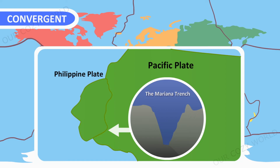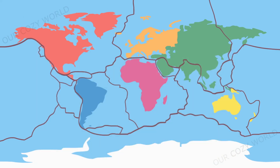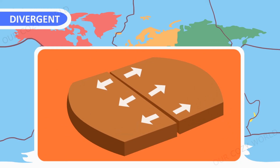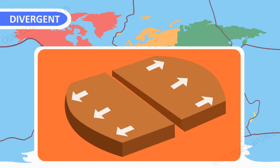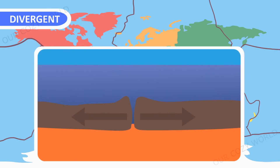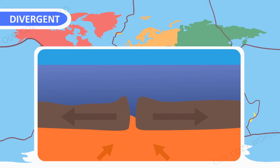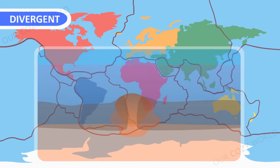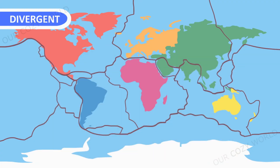For example, the Mariana Trench, the deepest place on Earth, was formed by the convergence of the mighty Pacific and smaller Philippine plates. Alternatively, plates can move away from each other, creating a gap which gradually grows into a huge split, allowing magma to rise to the surface. The magma solidifies, forming a new crust at the edges of the plates.